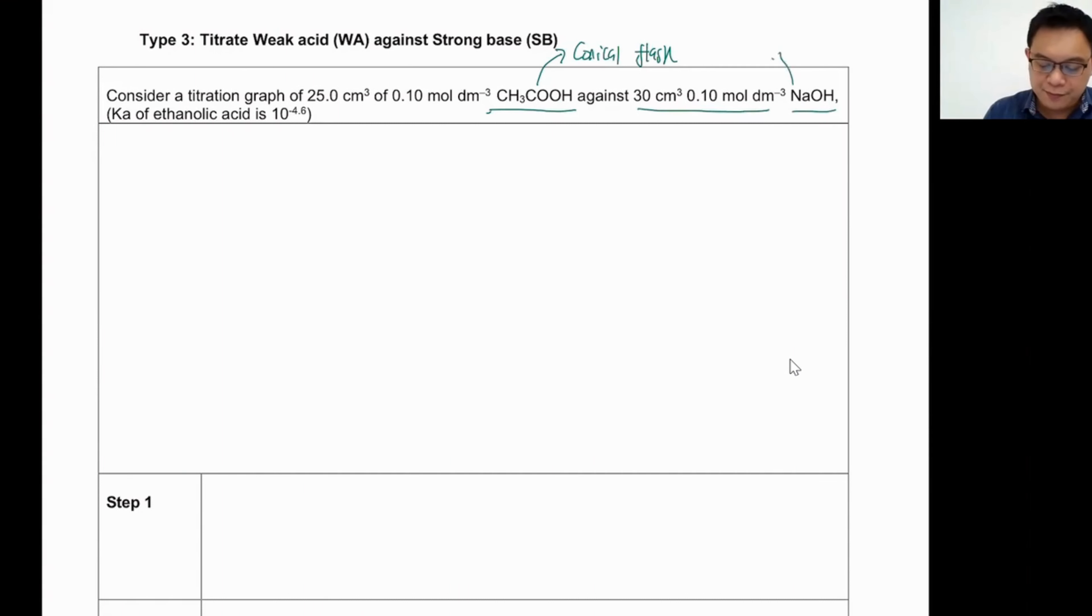The y-axis is like a burette. So this is the burette. Now we are very crystal clear who is in the conical flask and who is in the burette.